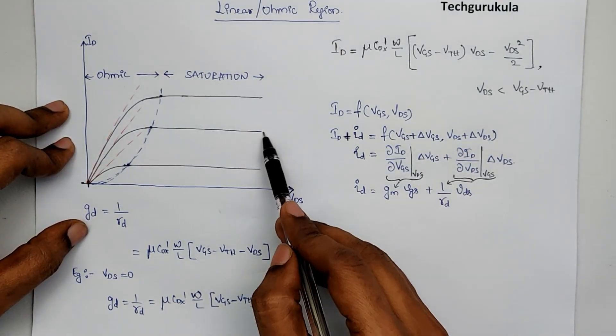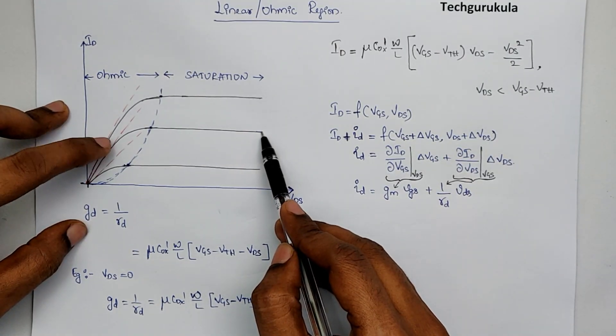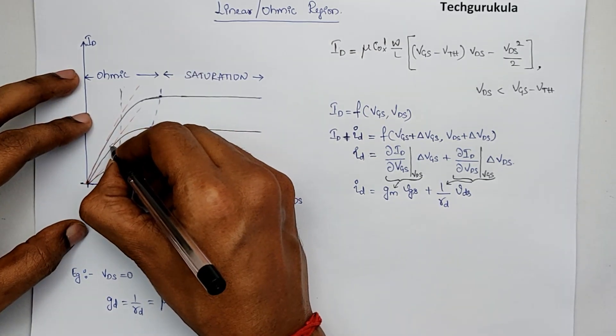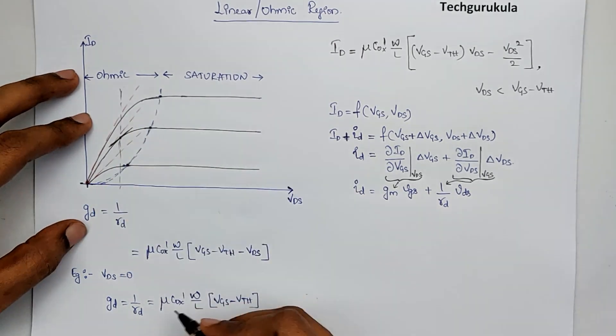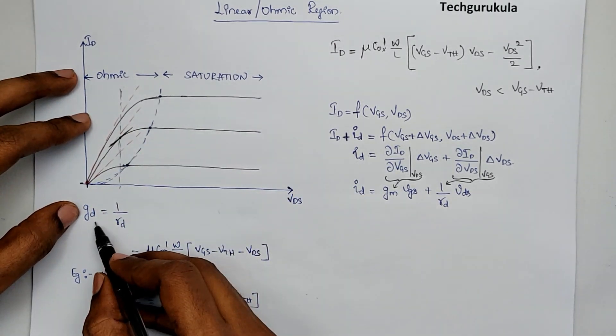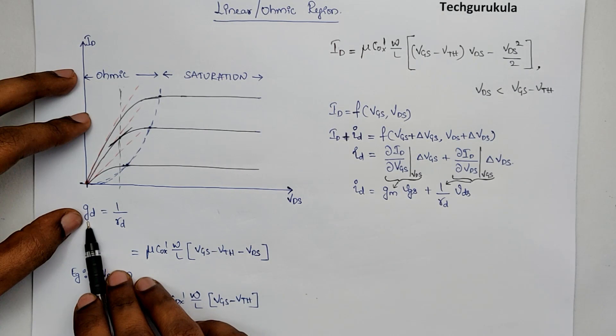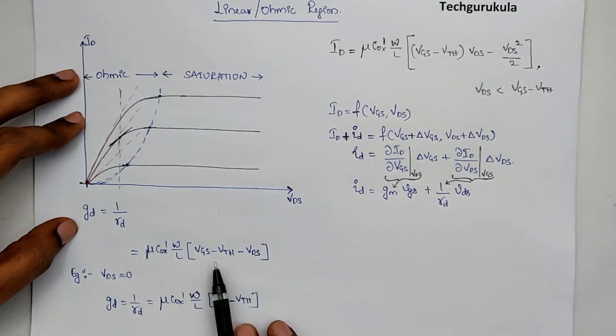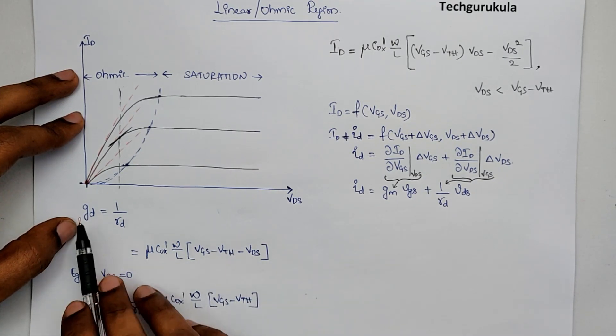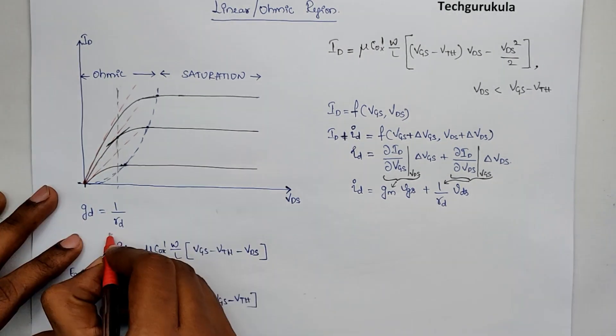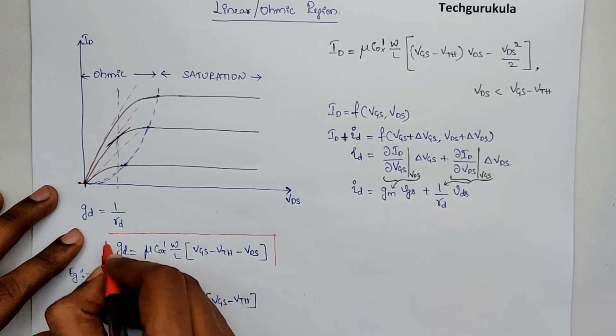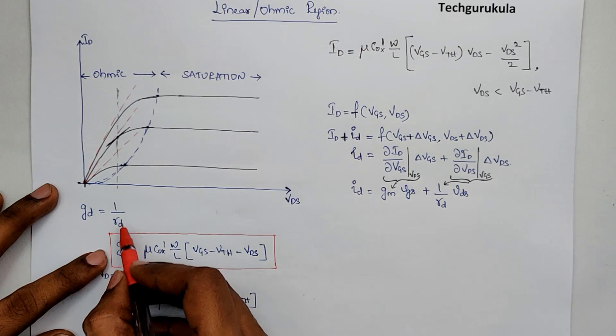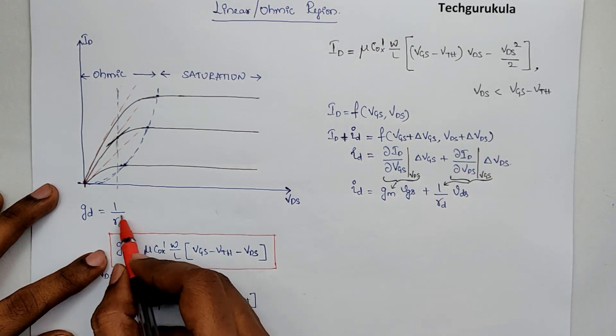Let's take VGS is particular to this curve and VDS is somewhere here. And if you see here, the slope would look something like this for this point. That would be GD, which means this GD would depend on DC biasing voltages, both VGS and VDS. For a given VGS and VDS, we can find a GD value. This is an important equation where we find the drain conductance, which is equal to 1 over RD, which is drain resistance.